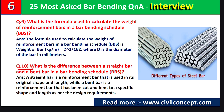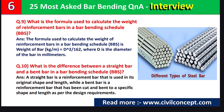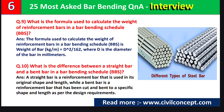Question number ten: what is the difference between straight bars and bent bars in a bar bending schedule? A straight bar is a reinforcement bar used in its original shape and length, while a bent bar is a reinforcement bar that has been cut and bent to a specific shape and length as per design requirements. When we bring the rebar from the market it is a straight bar, but during construction we bend it at different angles — like for stirrups — making it a bent bar.